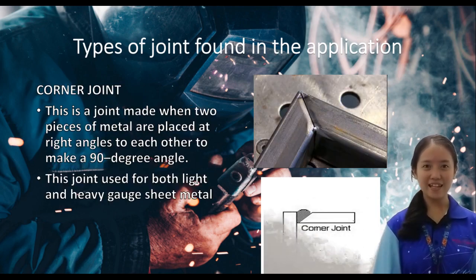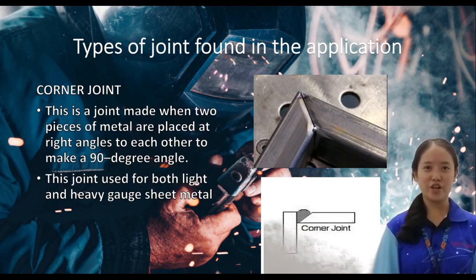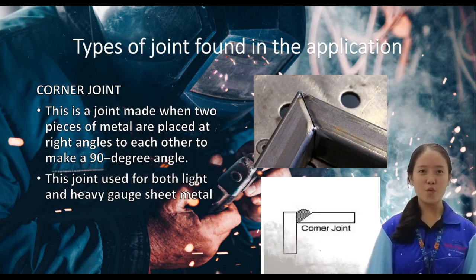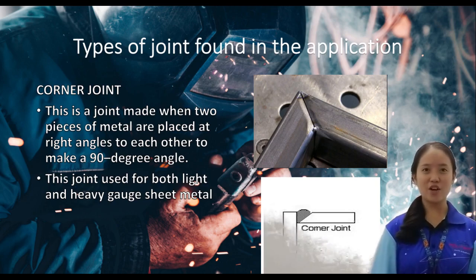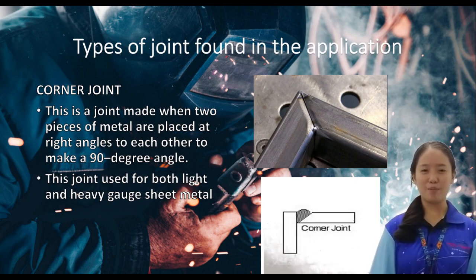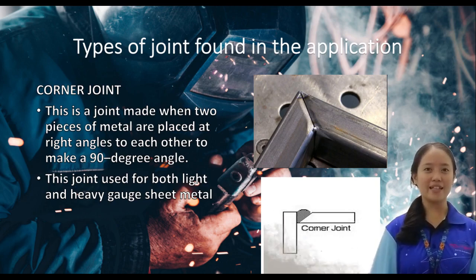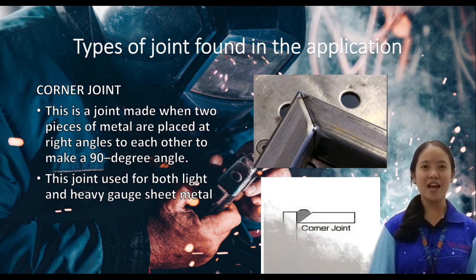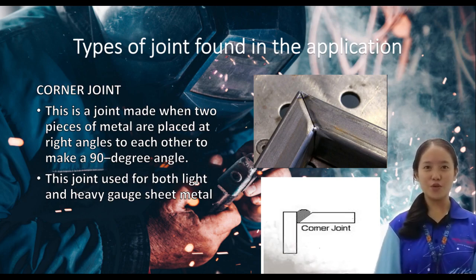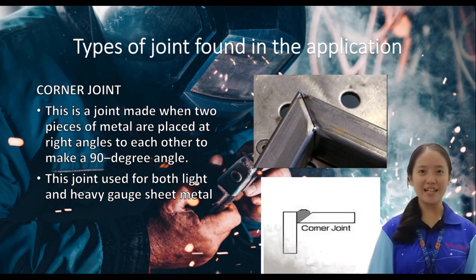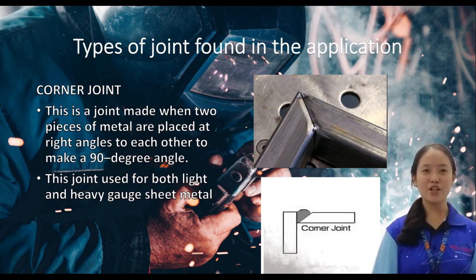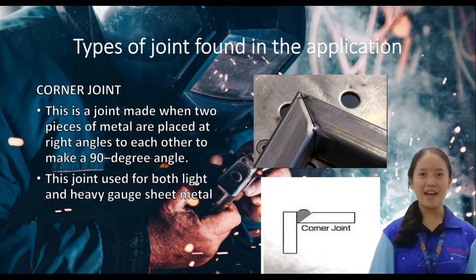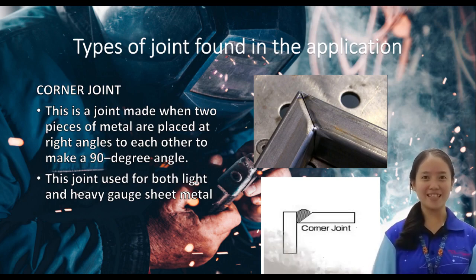Lastly, the corner joint. A corner joint is made when two pieces of metal are placed at a right angle to each other to make a 90-degree angle. The joint is used for both light and heavy gauge sheet metal.